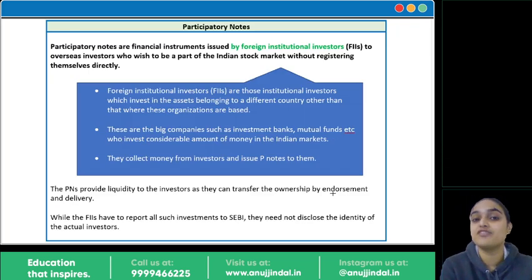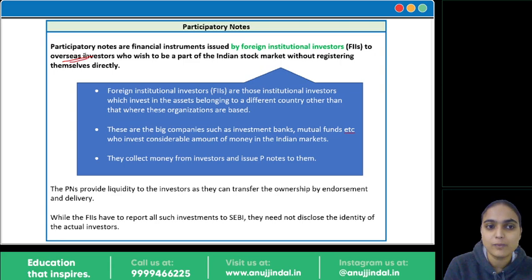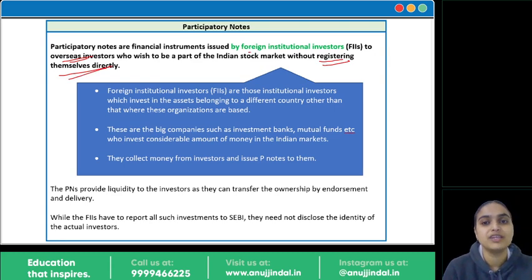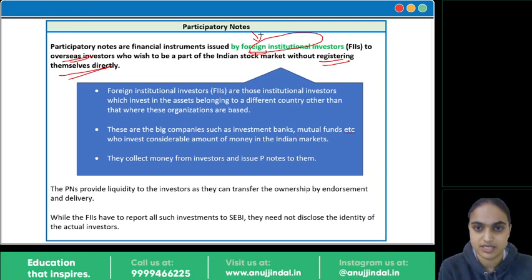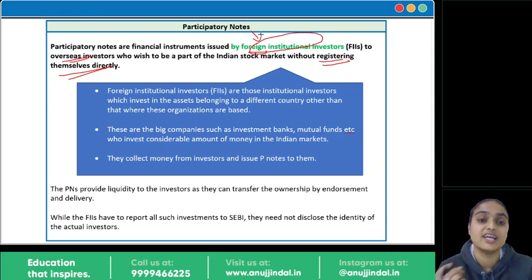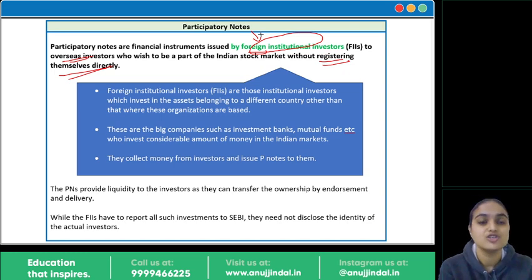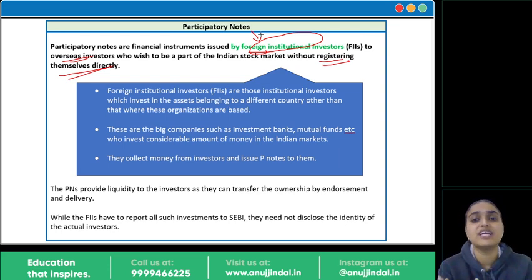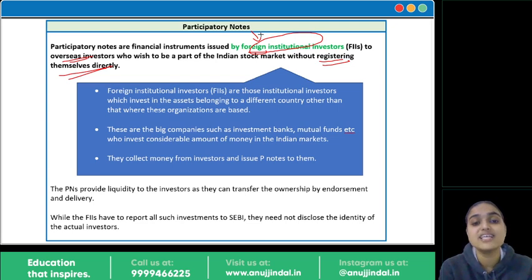As I mentioned, P-Notes are a financial instrument through which overseas investors can invest in India. The key difference is that you don't need to register directly. Through foreign institutional investors, you can make an investment in India. FIIs are big institutions that operate internationally and make investments in India — they are institutional investors who invest in assets belonging to different countries. These institutional investors include banks, big companies like mutual fund houses, and investment banks. Various foreign investors can approach these institutional investors.